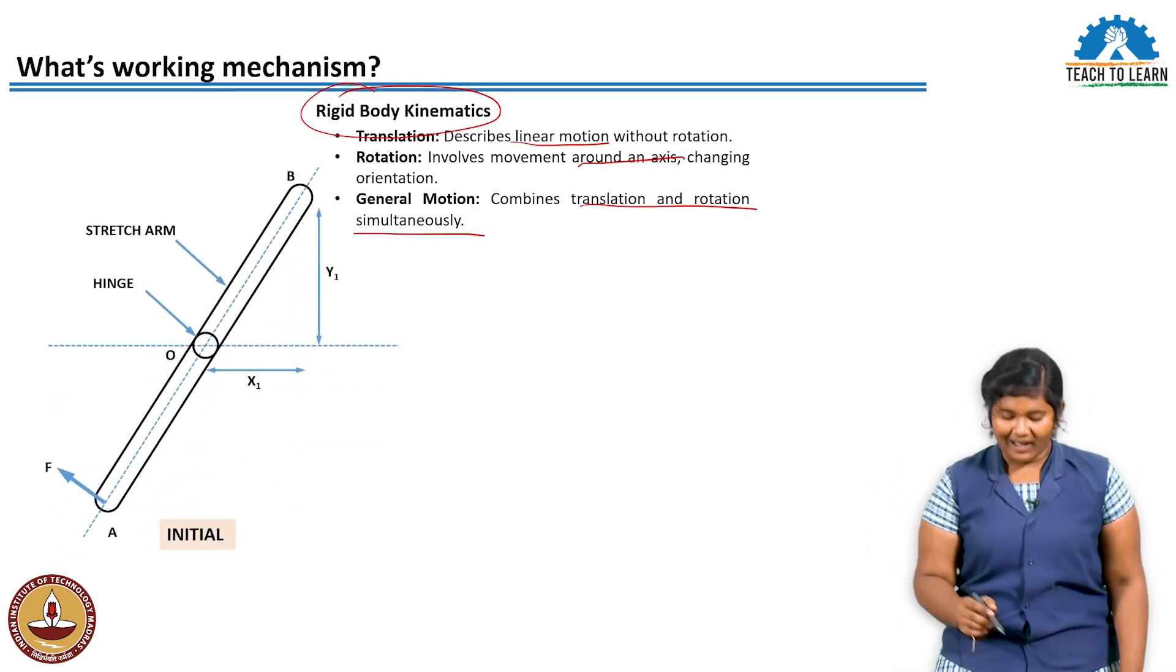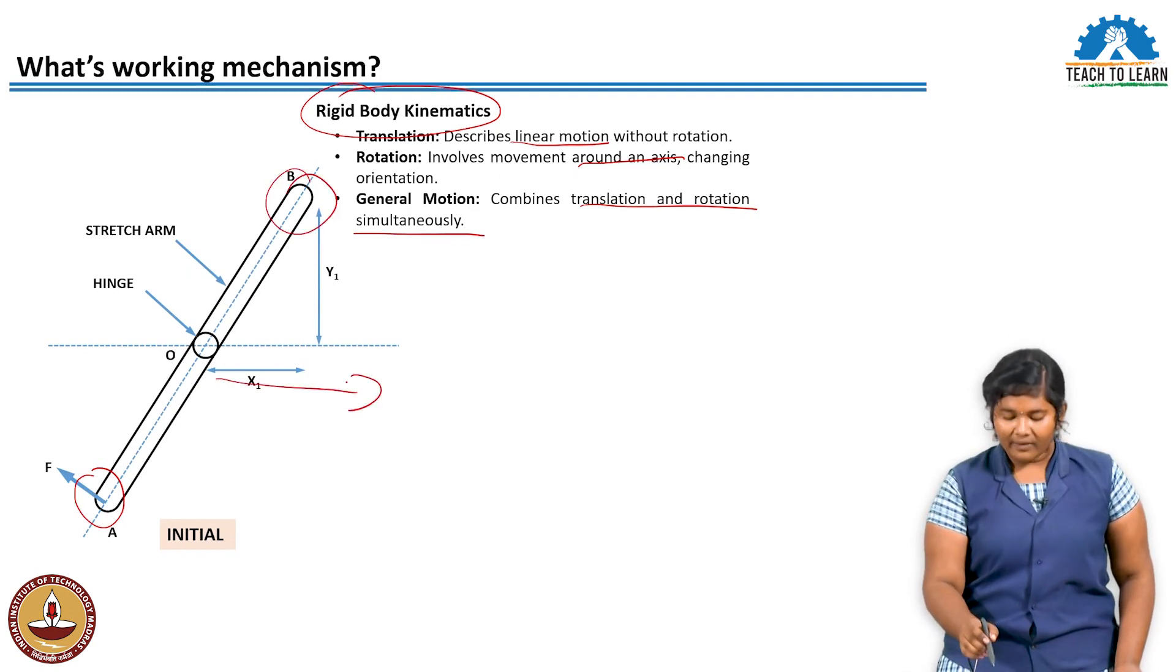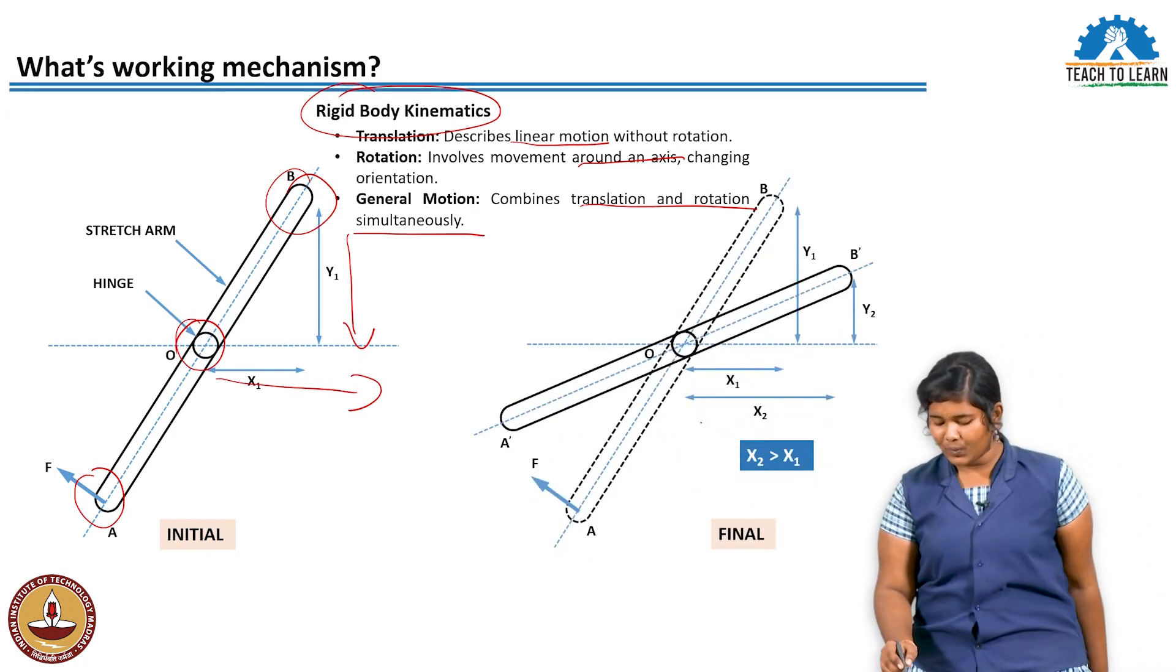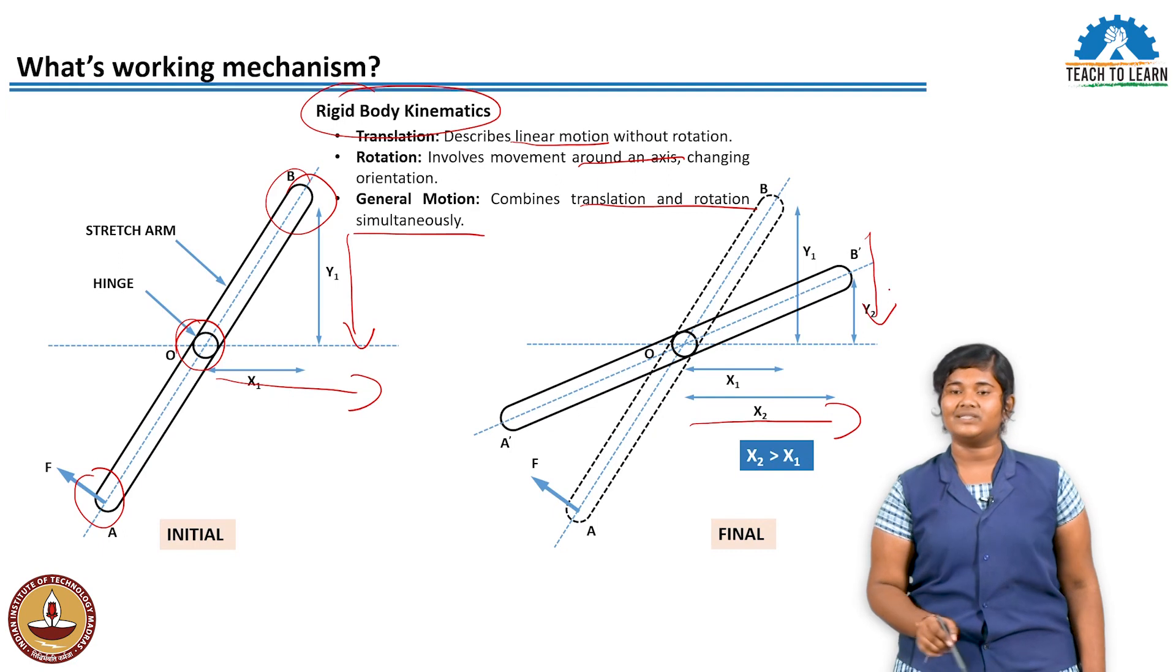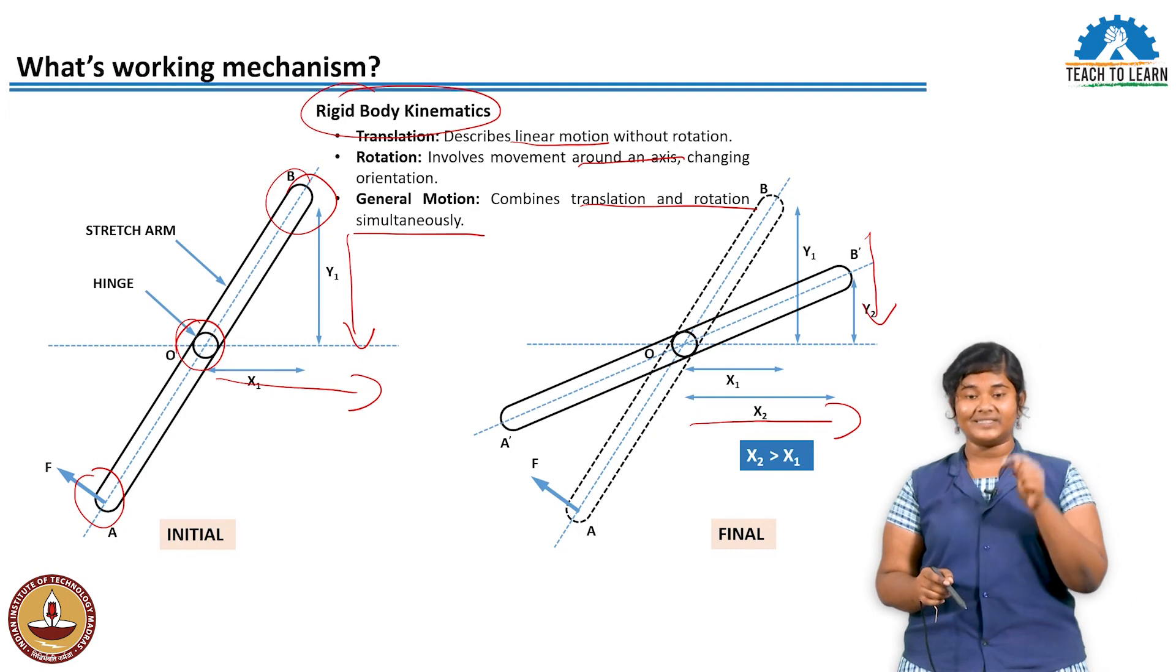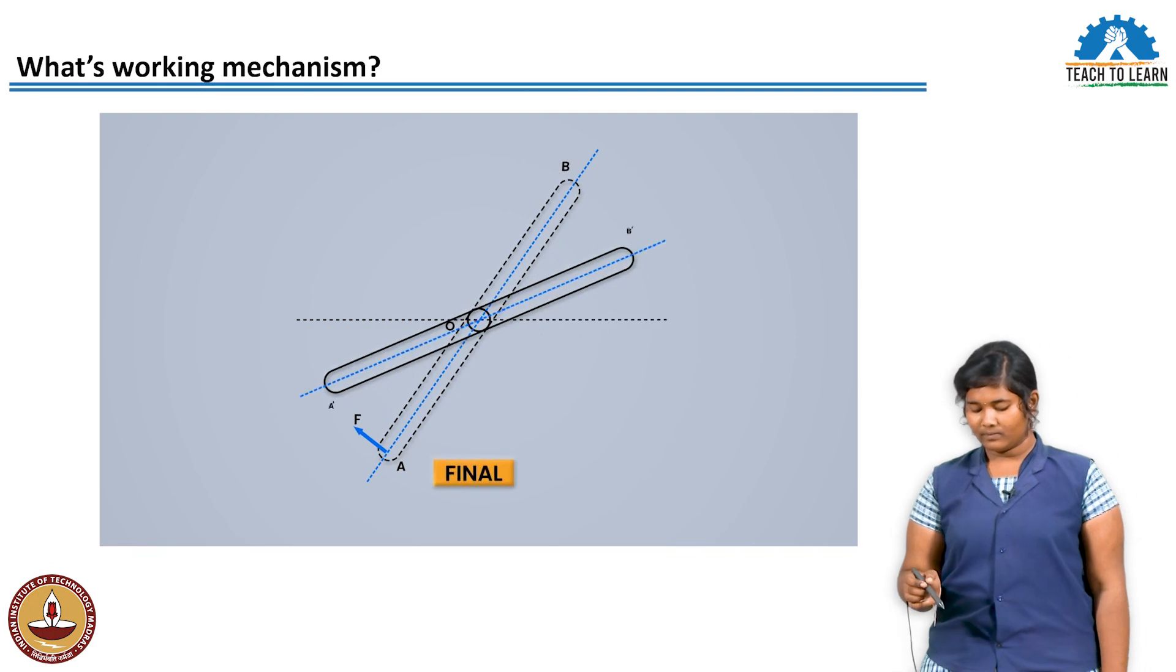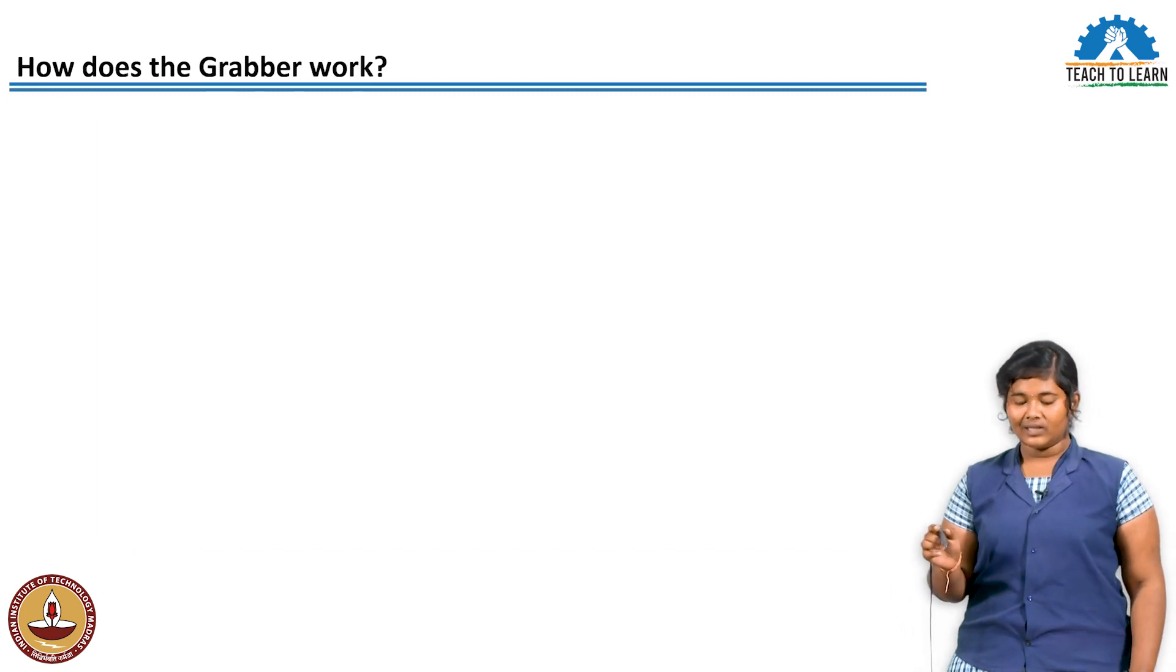In general motion, we have horizontal distance X1 and vertical distance Y1. One point is hinged. When you pull the grabber, the horizontal distance increases and the vertical distance decreases. This is how the grabber works.